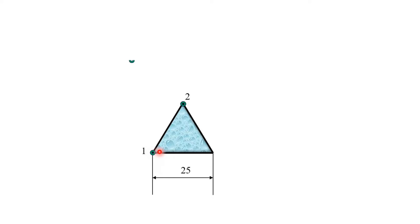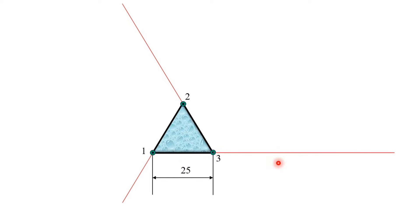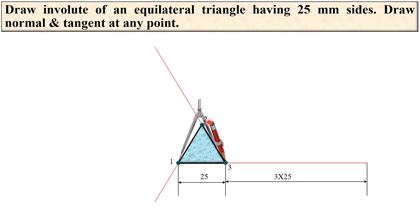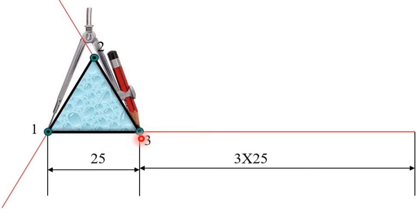Now give the names 1, 2, 3 to the vertices of the triangle. Draw a line parallel to the side of this triangle, taking the length randomly at first. The total length of the string required is 3 times the side length of the triangle, which is 75 mm. So take the length of the string as 75 mm. Now set the compass to a radius exactly equal to the side of the triangle — here it is 25 mm.